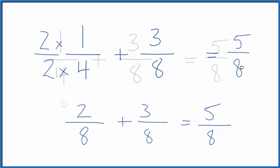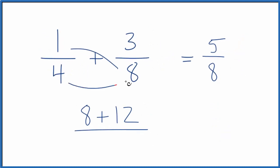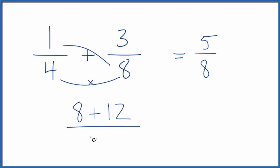So we could multiply 1 times 8, that's 8, plus 4 times 3, that's 12, and then 4 times 8. 4 times 8 is 32, so this gives me 20 over 32.